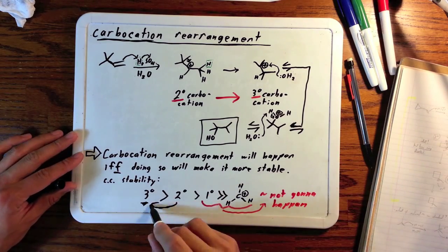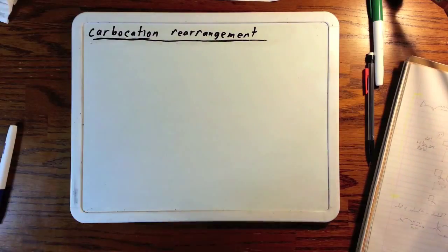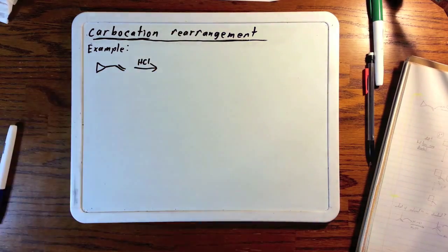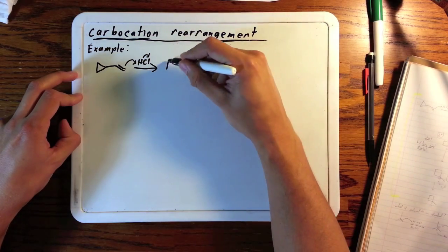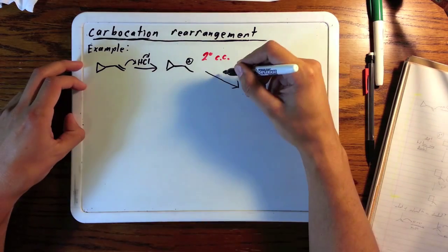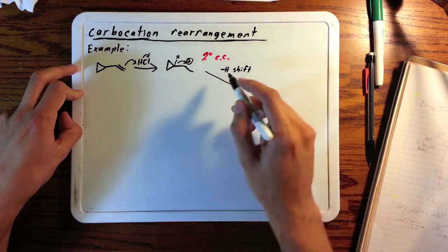We're going to close with an example that should give you a pretty good idea of how carbocation rearrangements work in practicality. If we wanted to go directly from a secondary carbocation to a tertiary, we would need a hydride shift, which is another option in rearrangements.